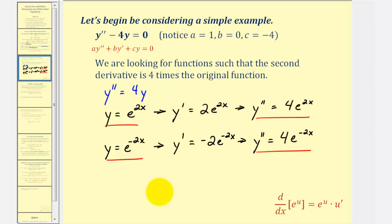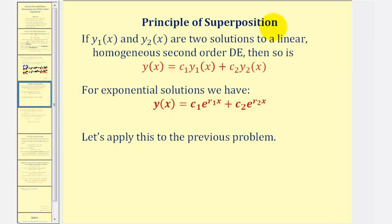So to find the general solution to the differential equation, we'll apply a special principle called the principle of superposition, which states that if y sub one of x and y sub two of x are two solutions to a linear homogeneous second order differential equation, then y of x will be the general solution, where y of x equals c sub one, a constant, times y sub one of x, plus c sub two, another constant, times y sub two of x. So if we know that our functions are going to be exponentials, we can use the principle of superposition to find the general solution in this form.